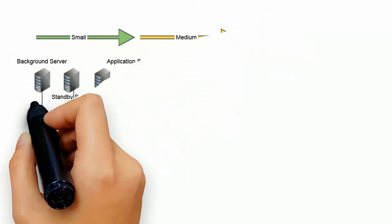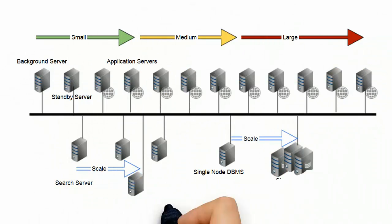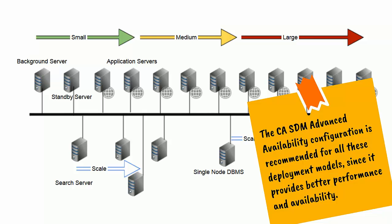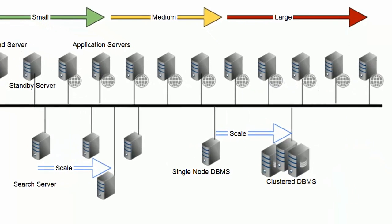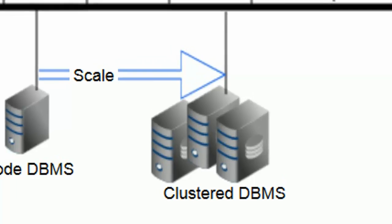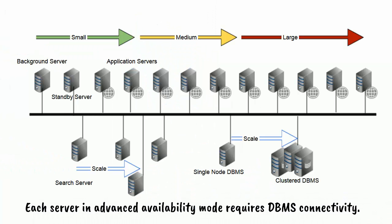You can deploy CASDM in your enterprise in small, medium, or large configuration. The CASDM Advanced Availability Configuration is recommended for all these deployment models since it provides better performance and availability. You can use cluster DBMS configurations to support large data volumes. Each server in Advanced Availability mode requires DBMS connectivity.